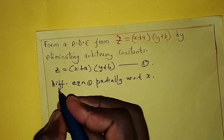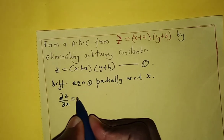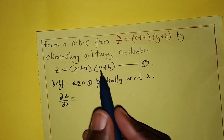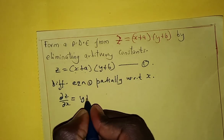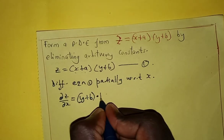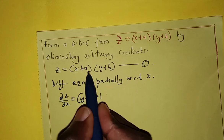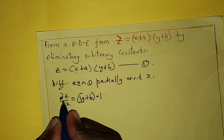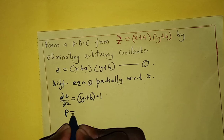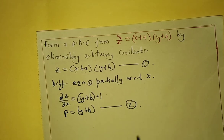We will use the product rule here. So, partial of z with respect to x is equals to: we differentiate this part keeping the other constant, so we have y plus b times 1, because when we differentiate x we get 1, and when we differentiate constant a, we get 0. So, partial z over partial x is the same as p, giving us p equals y plus b. This becomes equation number 2.